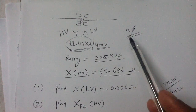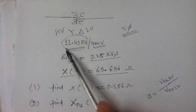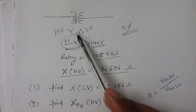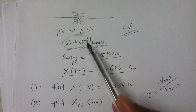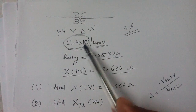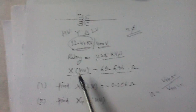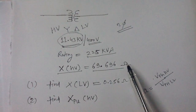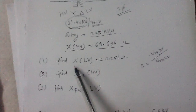This is a very important problem involving a three-phase transformer. The rated values of the transformer are 11.43 kV by 400 volts. The HV side is connected in star and the LV side is connected in delta. The voltages given in three-phase transformer ratings are line-to-line voltages. The second rating is 225 kVA, and the per-phase reactance referred to the HV side is 69.696 ohm.